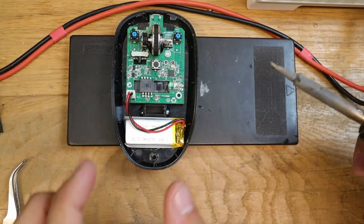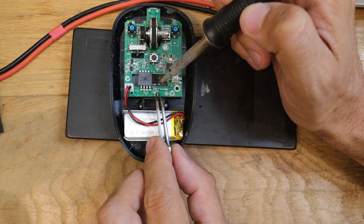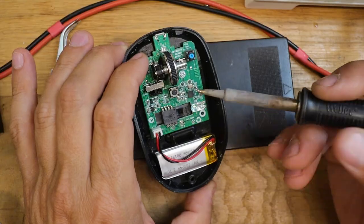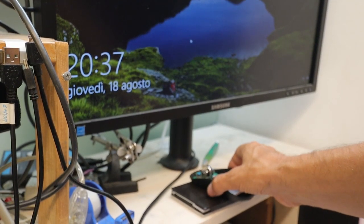Now I turn off the mouse and I will replace the 200-ohm limiting resistor with a 100-ohm, so I will double the current on the LED. Let's test it. The cursor is moving even on dark surfaces.